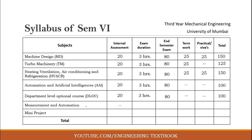Measurement and Automation is in the practical section. Being a practical or laboratory subject, it does not have internal assessment, exam duration, or end semester examination. It only consists of term work and practical, both of 25 marks, giving 50 marks total. This subject is interrelated to Automation and Artificial Intelligence — AAI is the theory subject and Measurement and Automation is the paired practical. Combined, these two subjects carry a total of 150 marks.